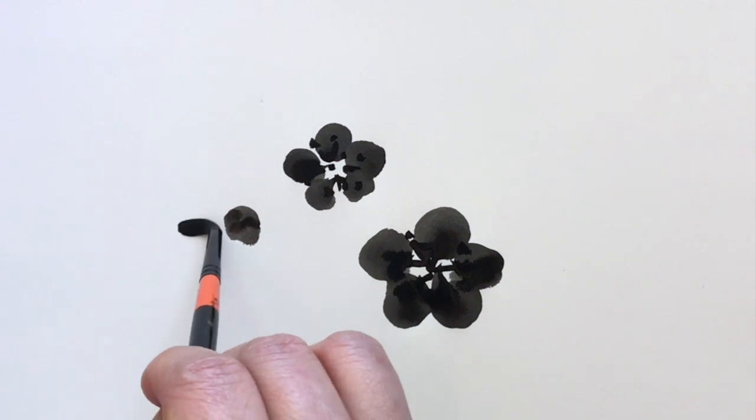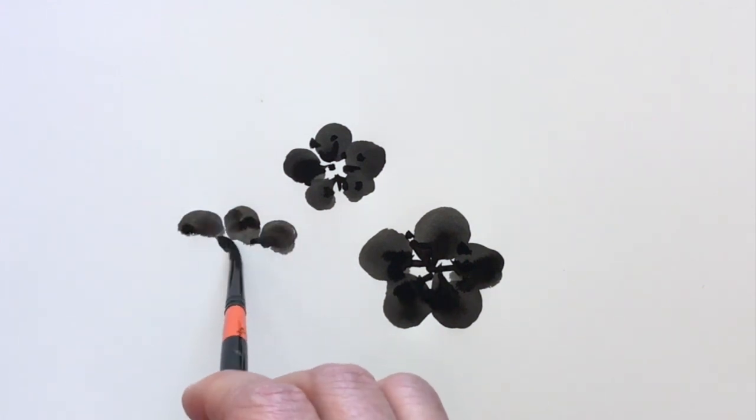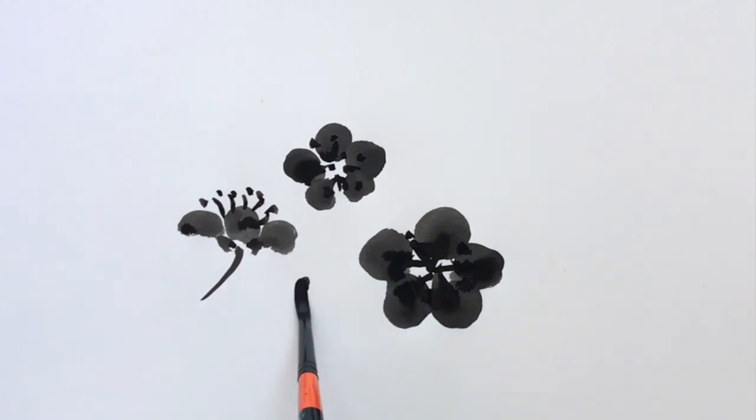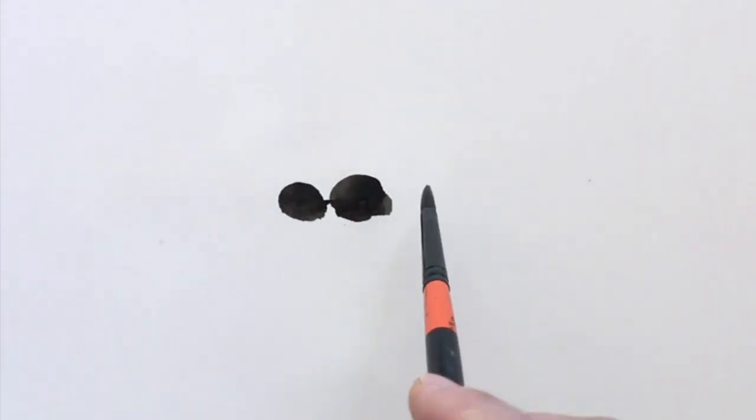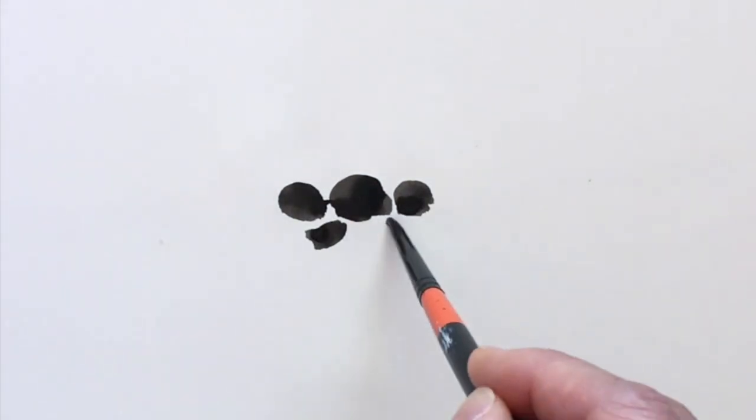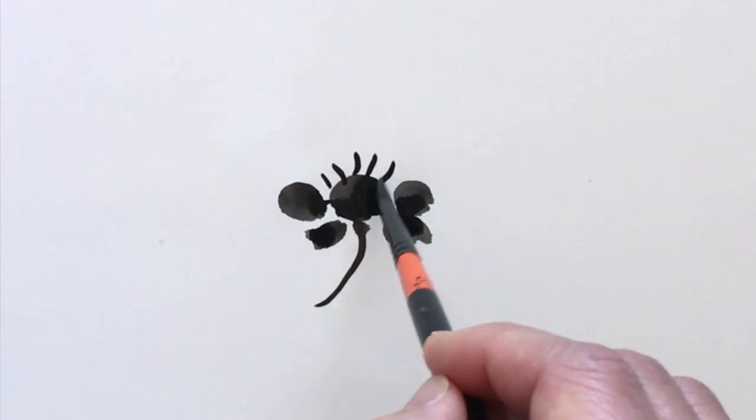We're going to draw them from different angles and practice doing that, just like we did with the line drawing one. We're going to do one facing up, and practice drawing some buds.